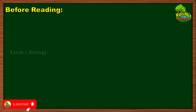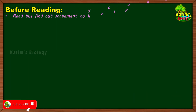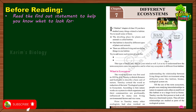In this session we are going to learn what different strategies you have to follow when you want to learn from a book. There are steps before reading, during reading, and after reading. Before you start reading, the first thing you have to do is read the 'find out' statement, which helps you know what to look for.